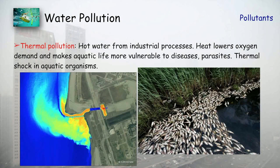Thermal pollution occurs when hot water from industrial processes is discharged into a nearby lake or river, increasing the temperature of that water body. This is not suitable for aquatic life like fish and plants, and fish may die because of the high temperature. This type of pollution is called thermal pollution, where only water is discharged but at a higher temperature than normal.